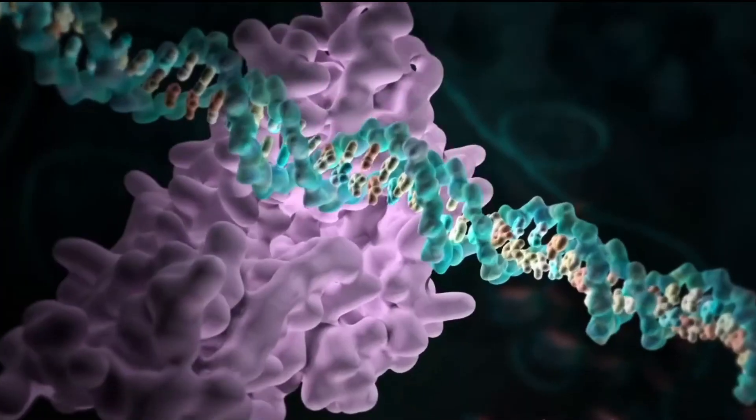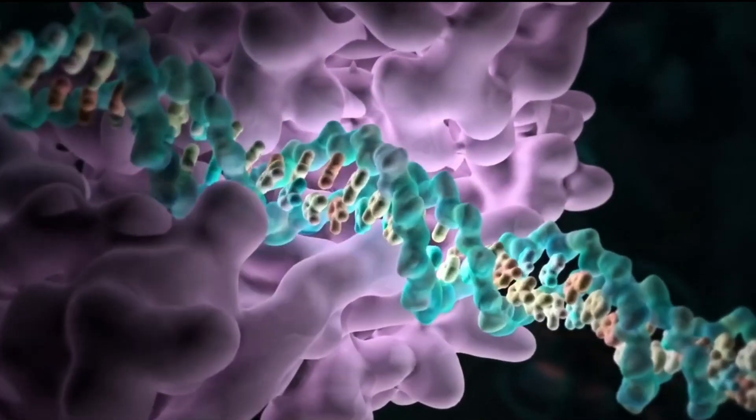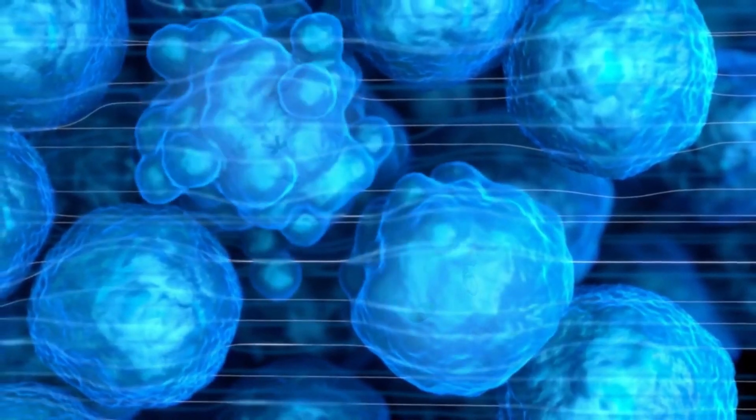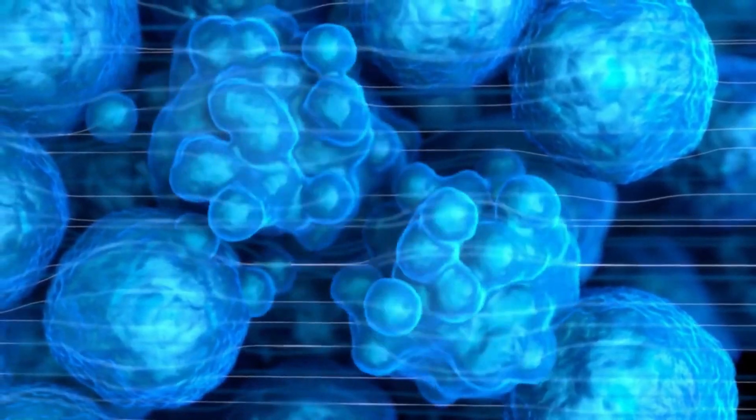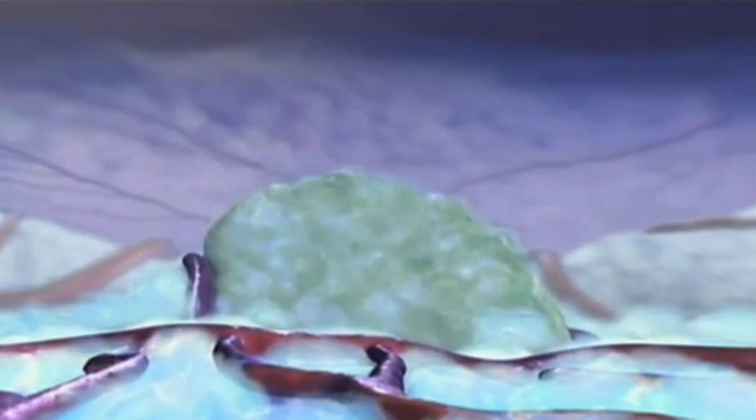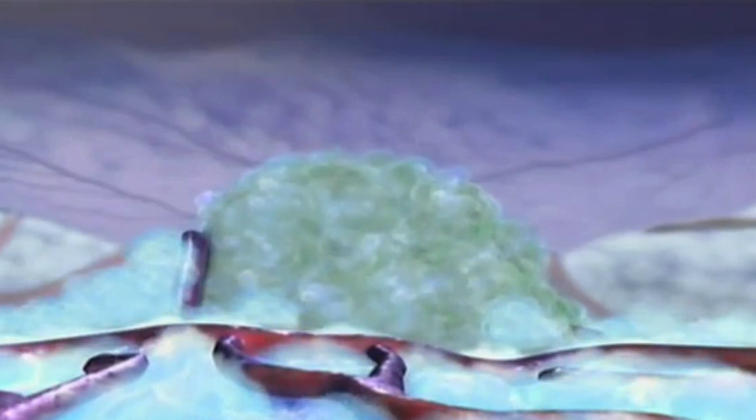Normally, when tumors develop, the body's T cells recognize the tumor cells as abnormal and will infiltrate and attack them. But as the cancer progresses, it suppresses the activity of the T cells.